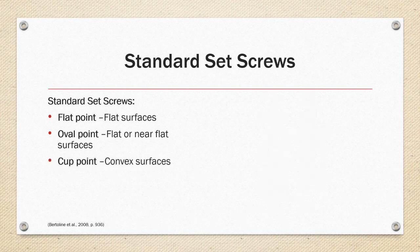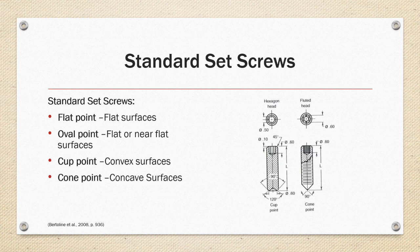For convex surfaces, the cup point, and for concave surfaces, the cone point provide the best grip on the surface. In the example on the right, the cup head point set screw has a hexagonal socket head and the cone point has a fluted head socket.